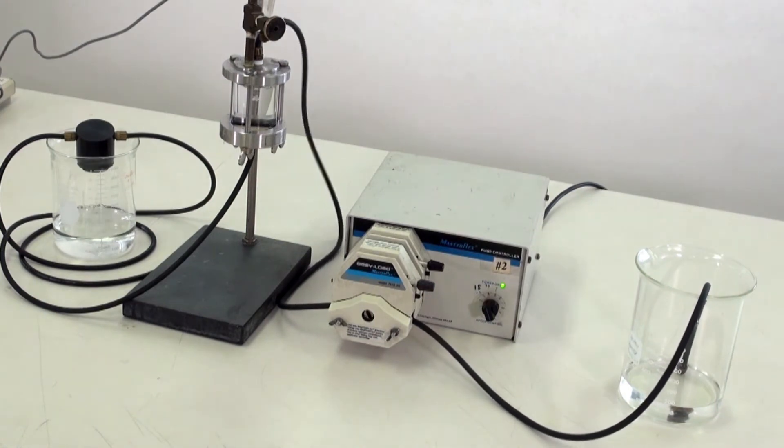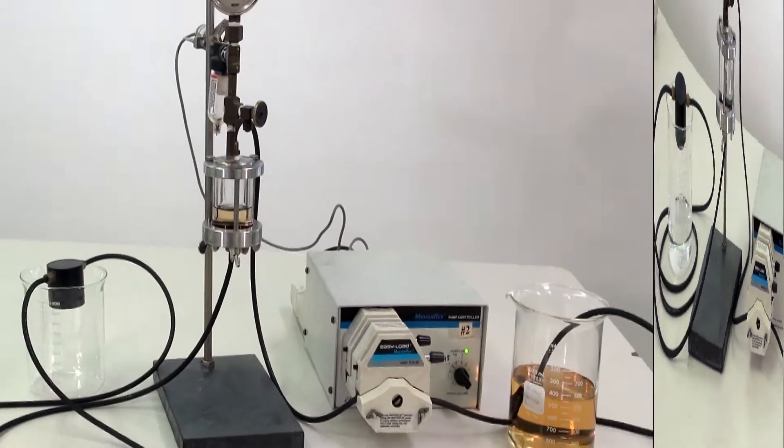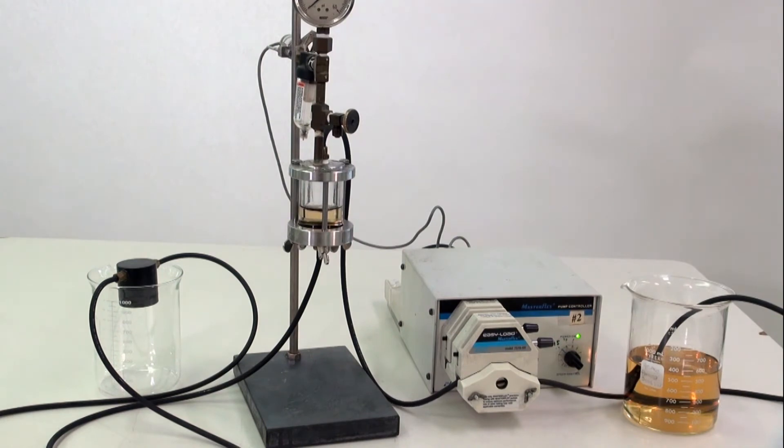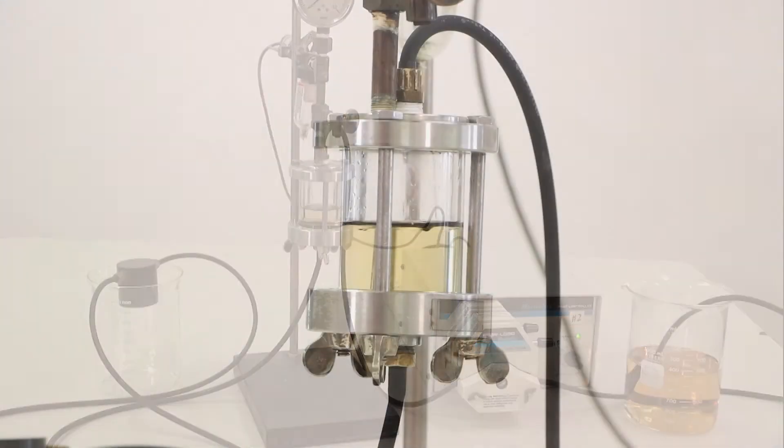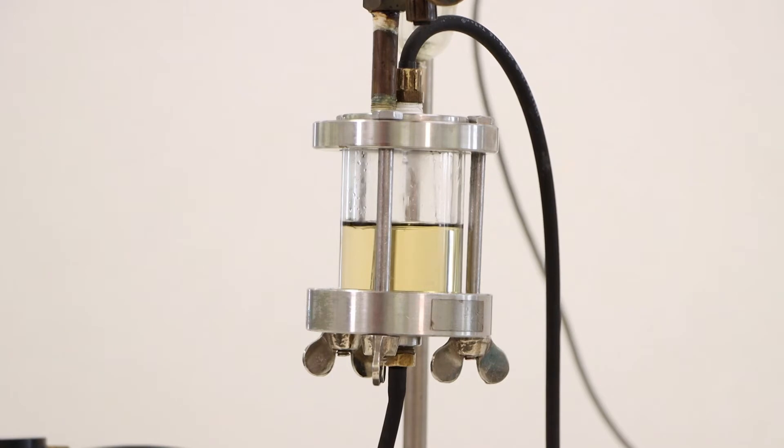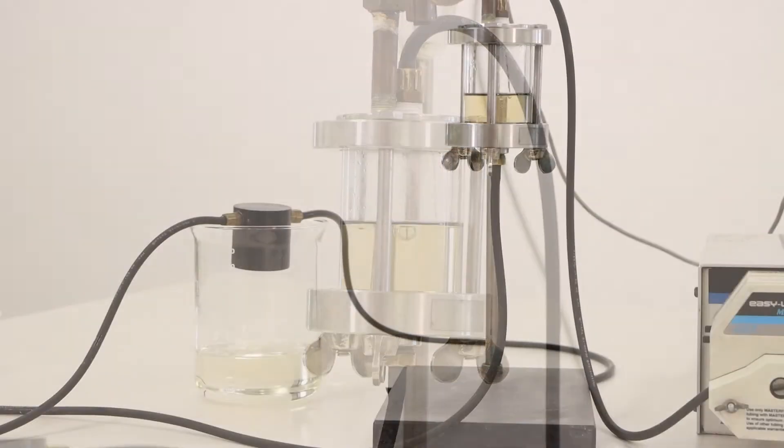Once the Carbec rinse is complete, we are ready to filter the tequila. The unfiltered tequila on the right is pumped into the glass housing. From there, the tequila is filtered through the Carbec media and into the beaker on the left.